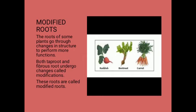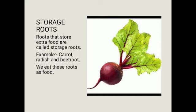Modified roots: The roots of some plants go through changes in structure to perform more functions. Kethe kuch roots aise hoti hain jo apne structure ko change kar leti hain — jyadha functions perform karne ke liye. Both tap root and fibrous root undergo changes called modification, aur hum in roots ko kya bolte hain? Modified roots. Storage root: Roots that store extra food are called storage roots. Kethe wo roots jinka paas extra food hota hain, woh apne mein store karke rakhte hain. Example: carrot, radish, and beet roots. We eat these roots as food.